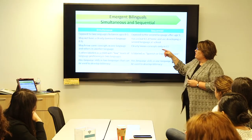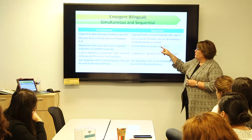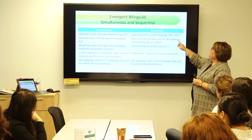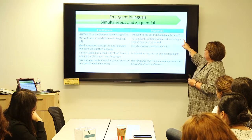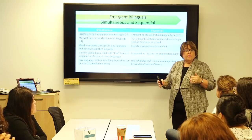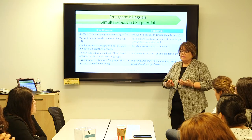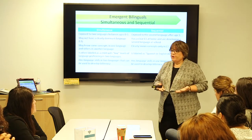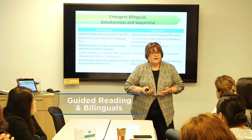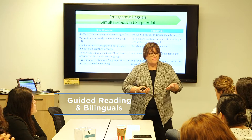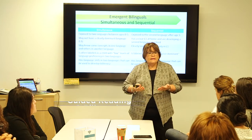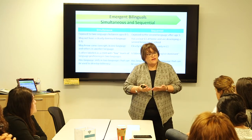Simultaneous bilinguals may not have a clearly dominant language, whereas in sequential bilingualism they're exposed to the second language after age 5. So knowing that when you sit at a table with your students to do a guided reading lesson, that some are simultaneous and some are sequential, has a little bit of implications.